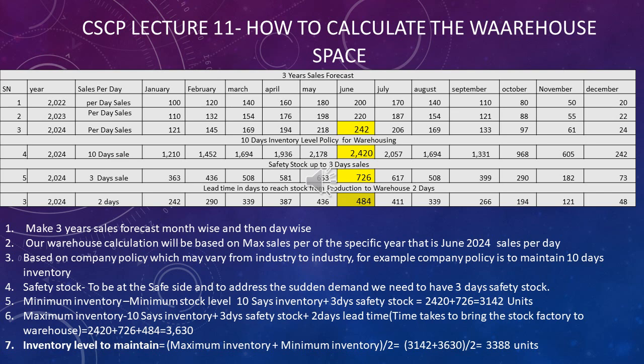The difference between minimum and maximum inventory is that maximum also includes transit stock. Transit stock accounts for the time products take to travel from production to the warehouse — for example, 2 days — adding another 484 units, giving a maximum inventory of 3,630 units. The average inventory is then (3,142 + 3,630) ÷ 2 = 3,388 units, and this is the figure used to calculate warehouse space.